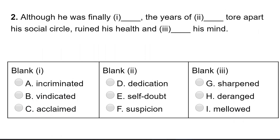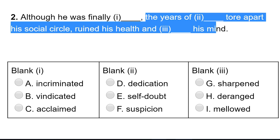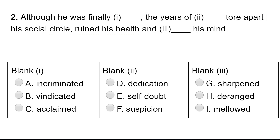Next one. Although he was finally something, the years of something tore apart his social circle, ruined his health, and something his mind. The first blank is likely positive because it's an 'although' — although he had this positive thing, all these bad things happened before. Incriminated is bad. Acclaimed is good. Vindicated is probably right — it means proven right. Although he was finally vindicated, the years of something tore apart his social circle. I'll reserve acclaimed for now but vindicated fits well.